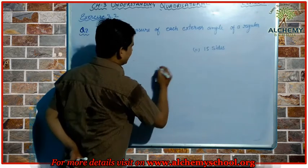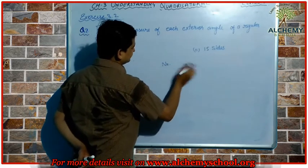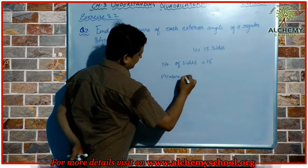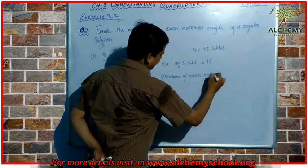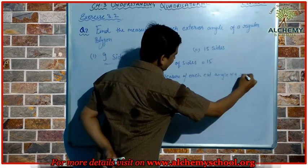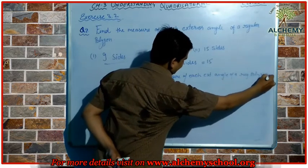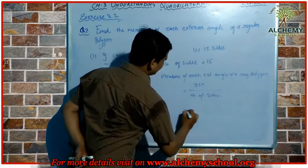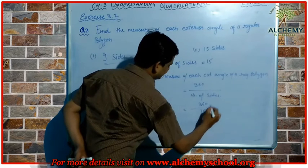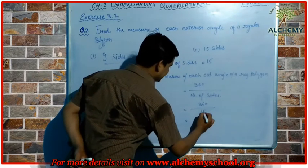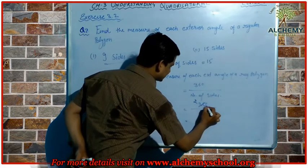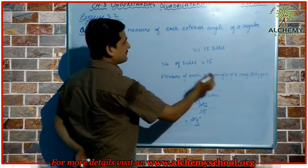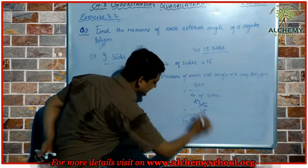For the next polygon with 15 sides, the measure of each exterior angle = 360 ÷ 15 = 24 degrees. So the measure of each exterior angle for a regular polygon with 15 sides is 24 degrees.